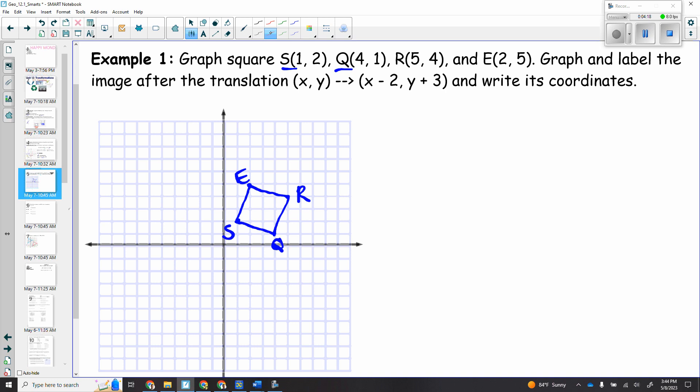And that's going to be very important. That's how we're going to write some of our answers today on your assignment. So compared to just if I start with a regular X and regular Y, we shift it left five and up three. Okay, here we're going to do one, and this should be in your notes. If you are one of my students, this says example one. Graph the square where we have S, Q, R, and E, and they give us those different coordinates. We're going to graph this, and we're going to label the image after the translation.